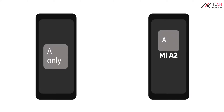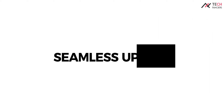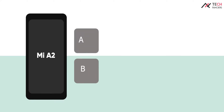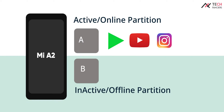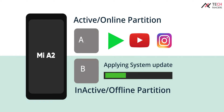Unlike normal A-only or single partition devices, MA-A2 has an A-B partition which supports seamless updates. What does that mean? Simple — we have two system partitions, A and B. Whenever we receive an update, the system will download and apply the update in the offline partition. For example, if you are currently running your device through a system installed in partition A, and you receive an update, the system installs the update in the offline partition, which is system B.